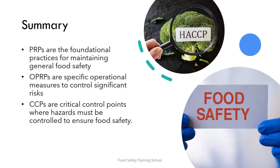In summary, PRPs are the foundational practices for maintaining general food safety. OPRPs are specific operational measures to control significant risks. And CCPs are critical control points where hazards must be controlled to ensure food safety. These terms are integral to designing effective food safety management systems that ensure the production of safe and high-quality food products.